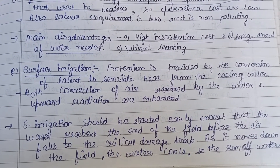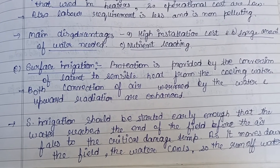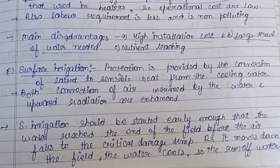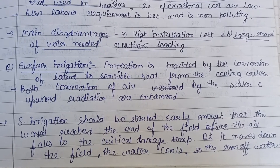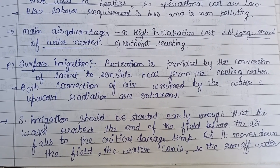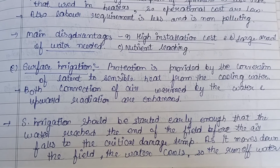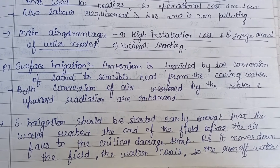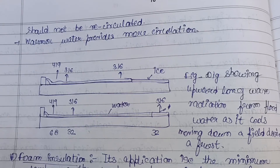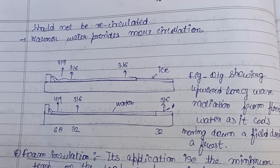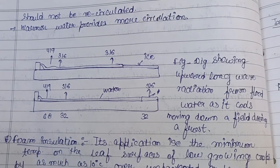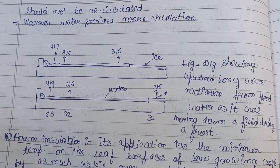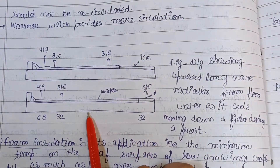Surface irrigation provides frost protection through conversion of latent to sensible heat from cooling water, enhancing convection of air warmed by the water and upward radiation. Irrigation should be started early enough that water reaches the end of the field before air temperature falls to the critical damage temperature. As water moves down the field it cools, so runoff water should not be recirculated — warmer water provides more protection.